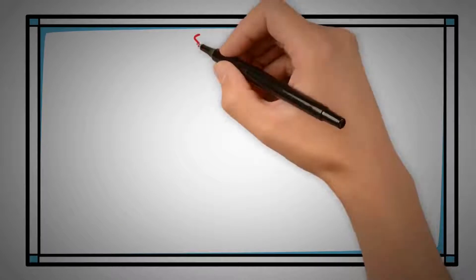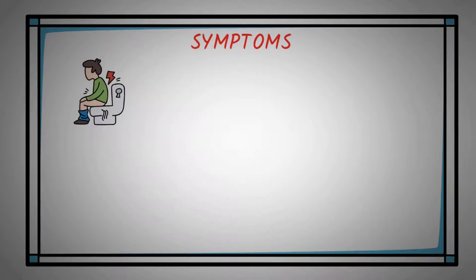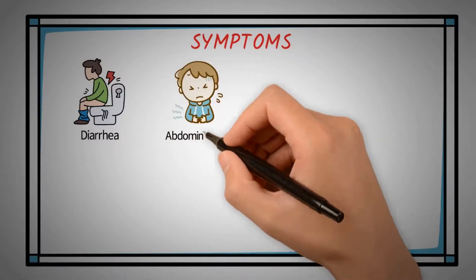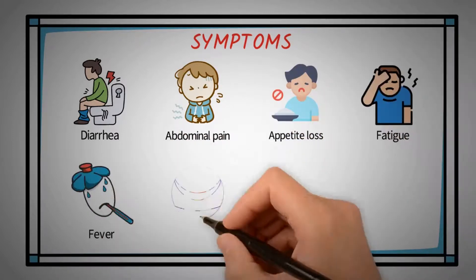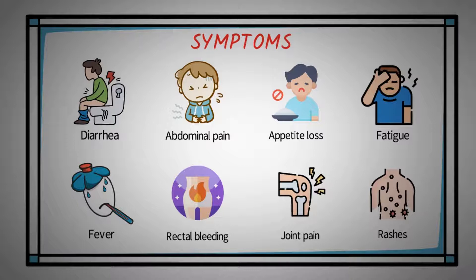The symptoms of IBD are often similar for ulcerative colitis and Crohn's disease. Symptoms include diarrhea — often loose and watery with Crohn's disease or bloody with ulcerative colitis — sore or chronic cramping pain in the abdomen, loss of appetite leading to weight loss, fatigue, fever, rectal bleeding, joint pain, and skin problems such as rashes. Symptoms can range from mild to severe and can sometimes go away for months or even years, called remission, before coming back, called a flare-up.